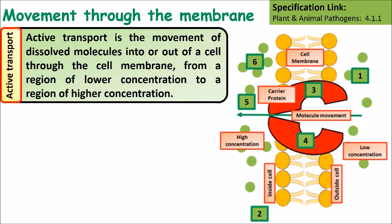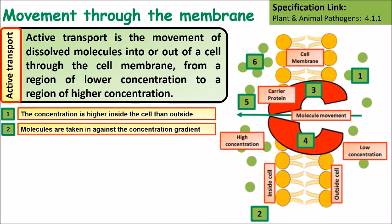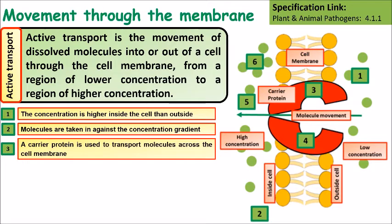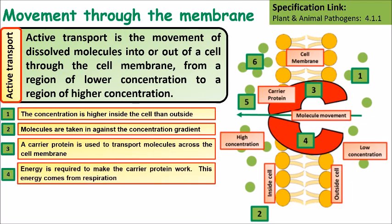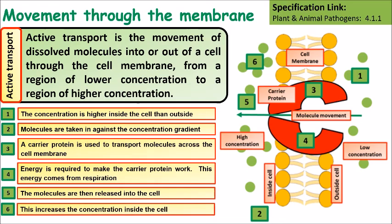Active transport is the movement of dissolved molecules into or out of a cell through a cell membrane, from a region of lower concentration to a region of higher concentration. The concentration is higher inside the cell than outside, so molecules are taken in against the concentration gradient. A carrier protein is therefore needed to take these molecules across the cell membrane, and energy is required to make the carrier protein work — this energy comes from respiration. Molecules are then released into the cell, which increases the concentration of these molecules inside the cell compared to outside.